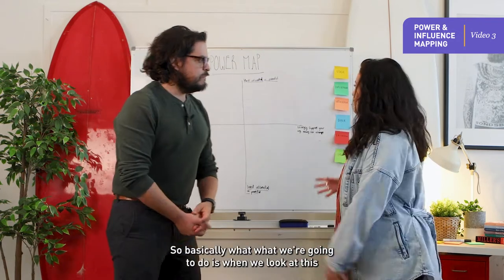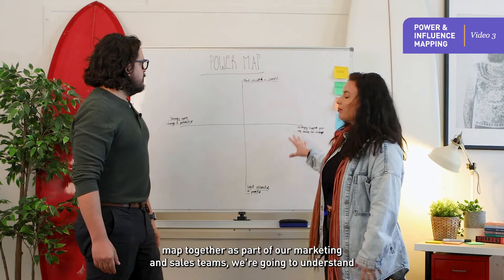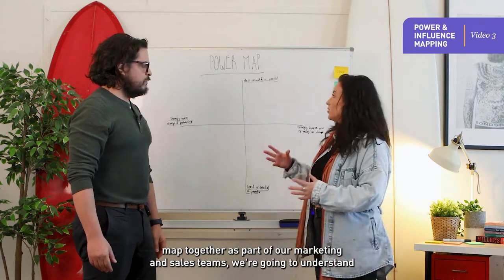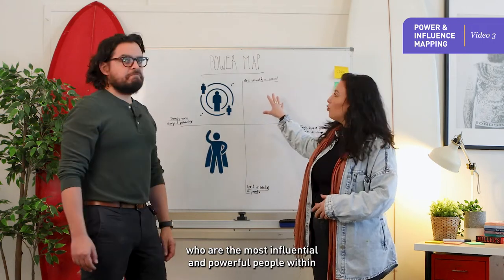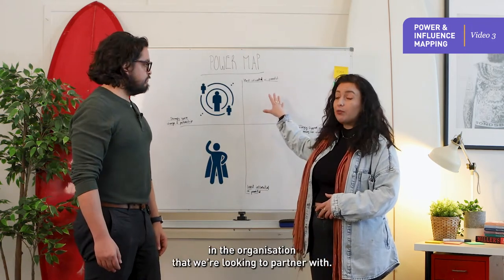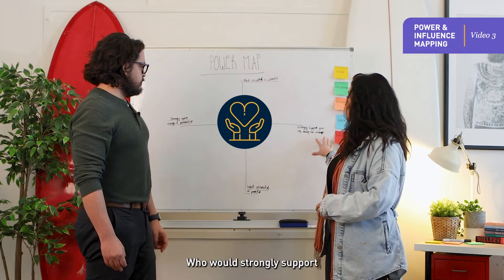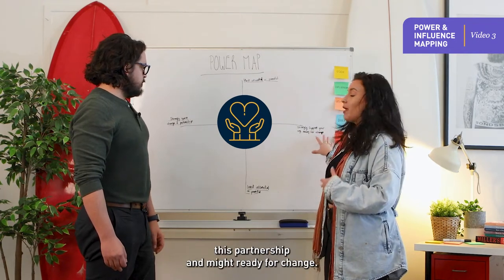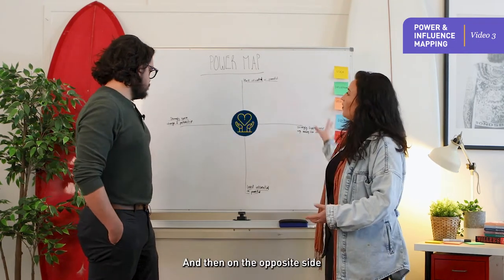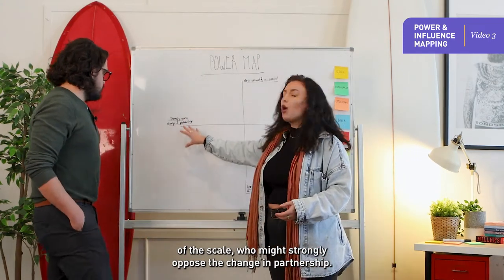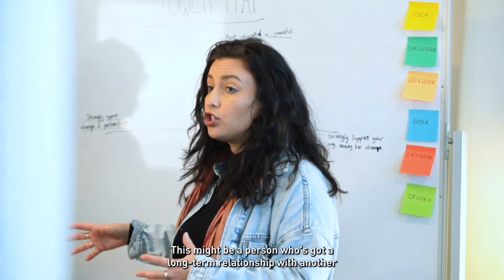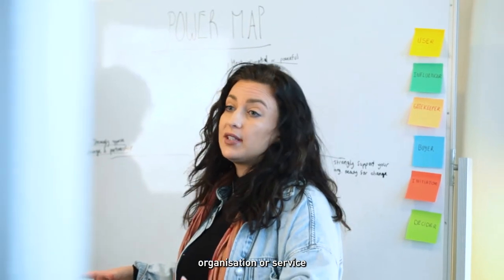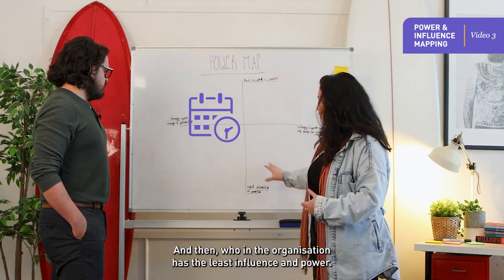When we look at this map together as part of our marketing and sales teams, we're going to understand who are the most influential and powerful people within the organization we're looking to partner with, who would strongly support this partnership and might be ready for change, and on the opposite side of the scale, who might strongly oppose the change — for example, a person who has a long-term relationship with another organization or service.